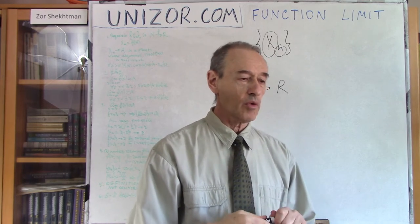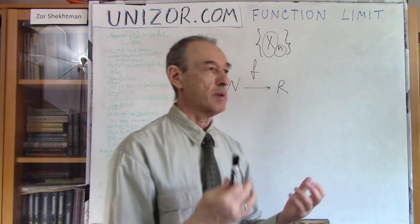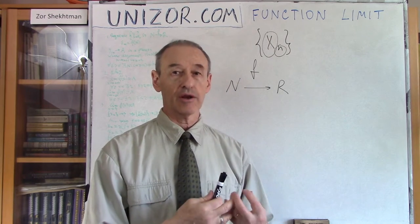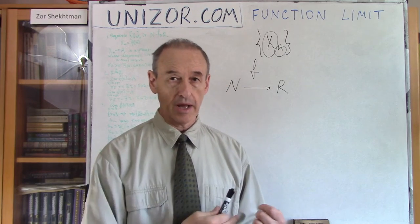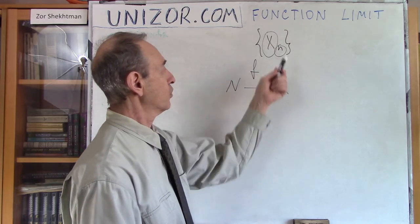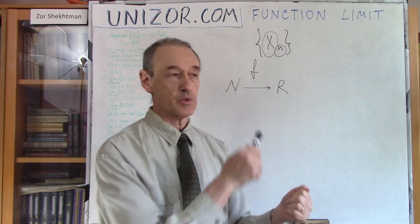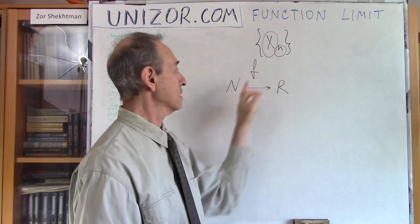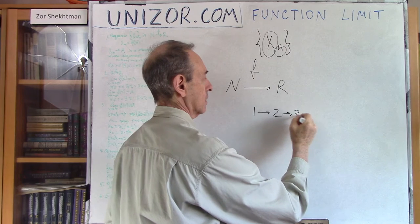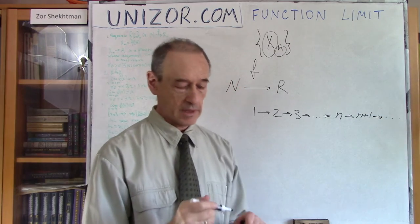There is one more very important consideration when talking about limits. Talking about limits implies talking about a certain process. It's not a single value of something — it's a multitude of values which are going somewhere, to infinity or to some number. What is the process in the case of a sequence? The process is 1, 2, 3, 4, etc. We are moving within our domain of natural numbers from any number to the next one. That is the process.